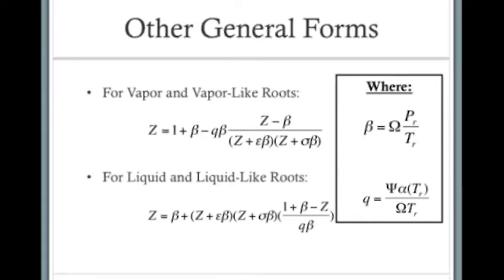Essentially, they are just the general forms solved for a different V, and also instead of V we are solving for Z, which is the compressibility factor. And then we also have the equation for beta and Q.